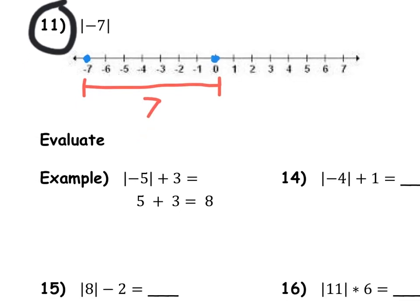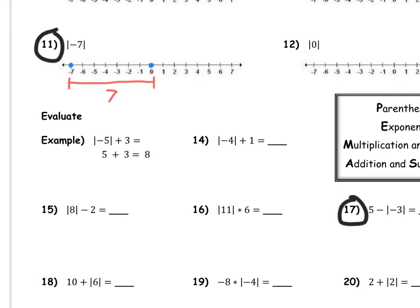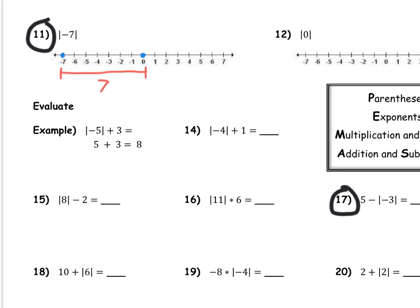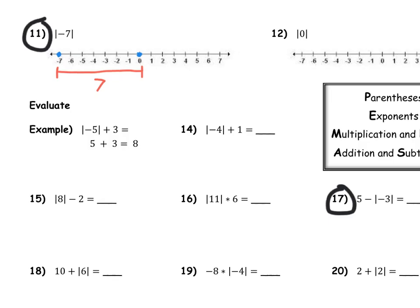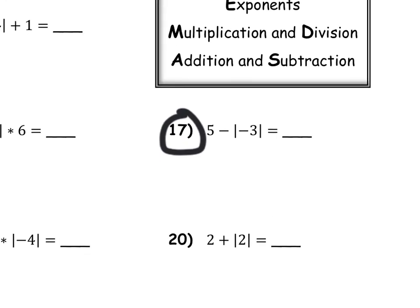So essentially what we do is we treat negative numbers or any number inside absolute values as its positive version. If you see a negative inside the absolute value sign, you take it to be the positive version. If you see a positive number inside the absolute value sign, you still take it to be the positive version. Let's look at number 17.